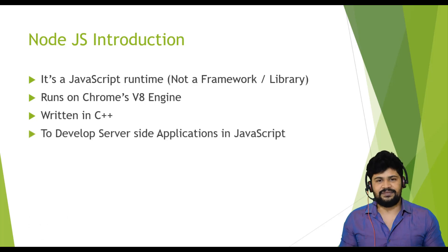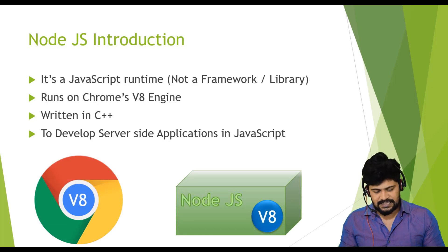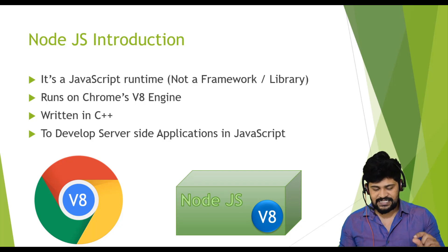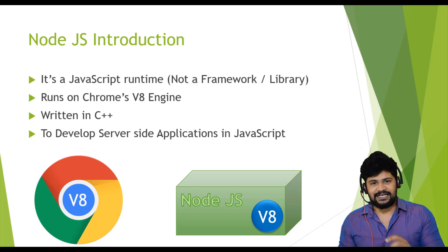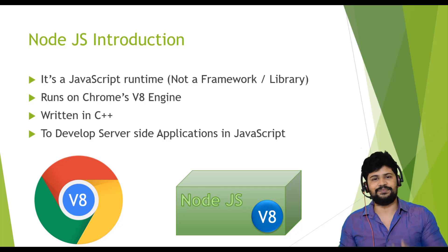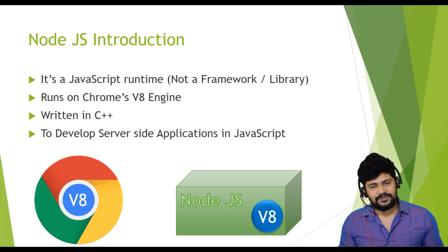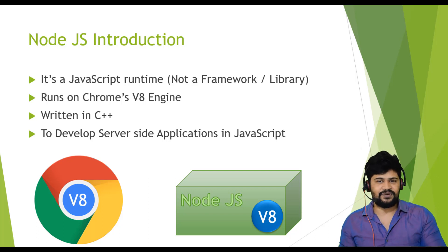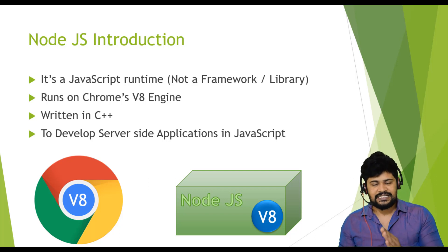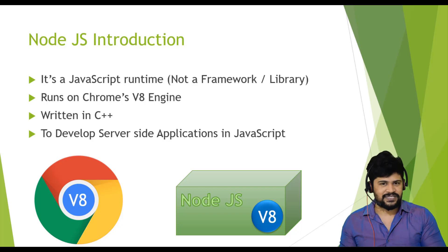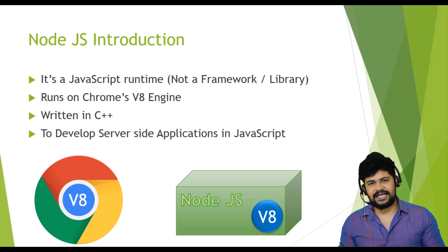We use Node.js to develop server-side applications. Chrome is an environment which contains V8, and Node.js is also an environment which contains the V8 engine. By having this V8 engine, we can run the same program — client-side we write JavaScript, and server-side we also write JavaScript. So the programming language JavaScript is common. Using the browser, we execute on the client. Using Node.js, we execute on the server. This makes it clear: Node.js is not a language, it is just an environment.